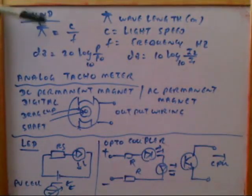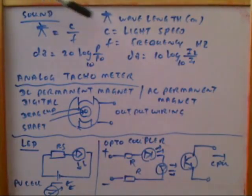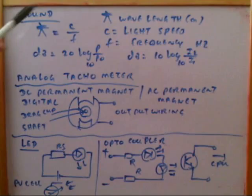We will use this formula: lambda equal to c by f. Lambda is wavelength and c is light speed, f is frequency. So then in this case, in control systems, the gain can be calculated.